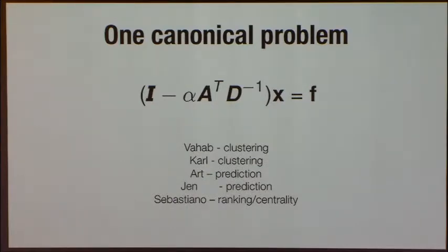We've already seen this a couple times. Vahab talked about this on Monday. Carl talked about this on Monday. Both of them were using this to do clustering analysis, finding good communities or clusters of your network by solving these equations and looking at their solutions. They of course want to solve them fast. Art used this in his talk on prediction yesterday. Jen had one slide on it in a slightly different form. And I know Sebastiano Vigna has looked at this a lot in other contexts, including centrality and ranking. We've seen a lot of these equations over the course of the week.